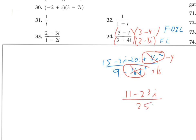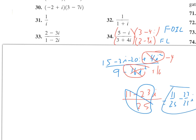A lot of times they'll split this up — dividing both terms on top by 25 — to write it technically in a plus bi form.